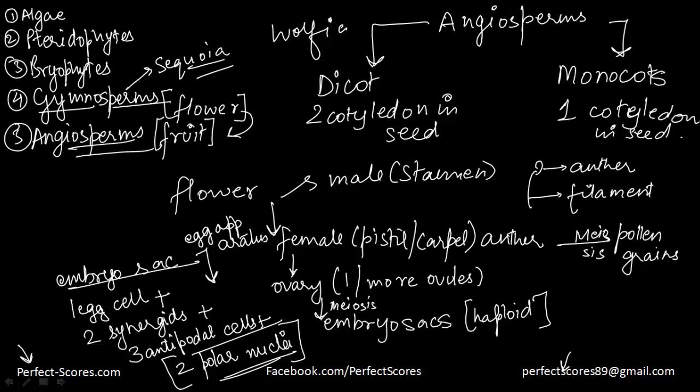Pollen grains, after being dispersed from the anthers, are carried by different agencies to the end of the pistil, which is called the stigma — that is the opening of the pistil. This process of pollen grains leaving the anthers and reaching the stigma is known as pollination. Next, we are going to explain the entire life cycle of an angiosperm in the form of a diagram.